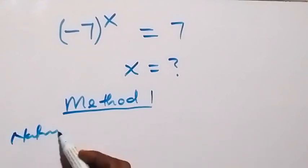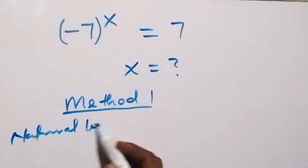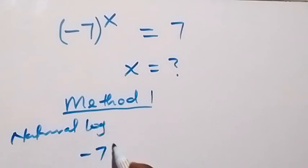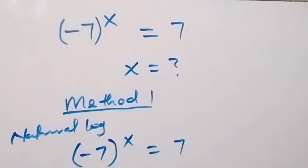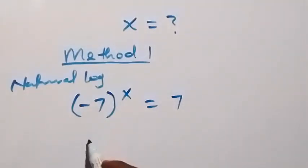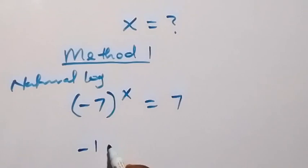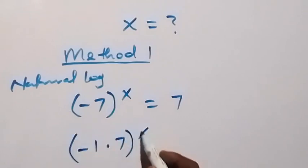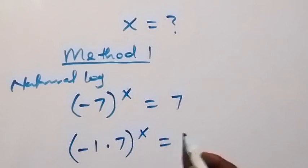What is given is minus 7 raised to the power x equals 7. Let's separate the minus here, so we have minus 1, then 7 raised to power x, equals 7.